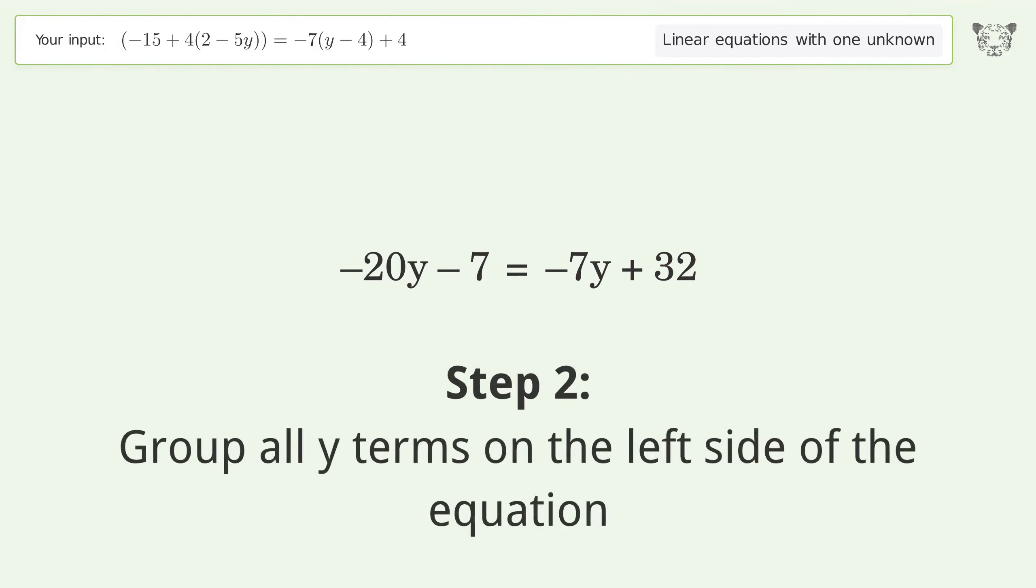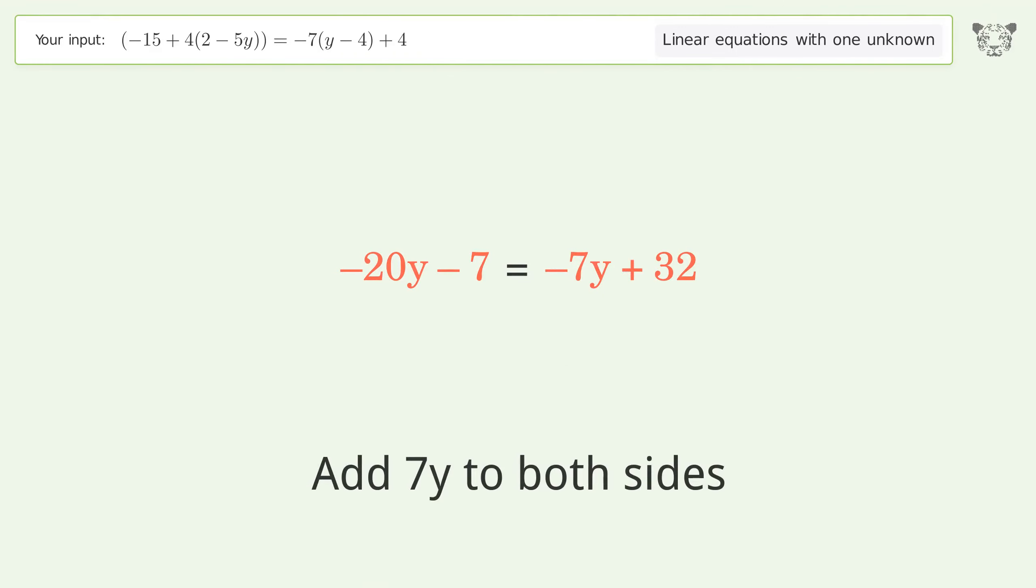Group all y terms on the left side of the equation. Add 7y to both sides. Group like terms.